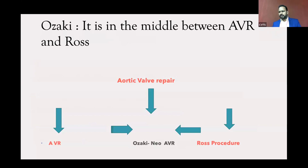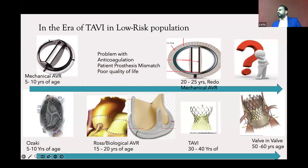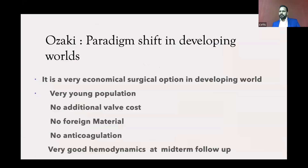In summary — when do I recommend Wasaki AVR? Definitely in children, young adolescents, and females in their reproductive age group. Certainly for early adults who would otherwise need a mechanical valve and lifelong anticoagulation, and for those with contraindications to anticoagulation. For surgeons working in low-resource settings without access to homograft, Wasaki AVR is a good tool to have. Personally, if you can repair the valve, that is best. But Wasaki Neo AVR falls in the middle between repair and AVR or Ross. In the era of TAVI, if you do a mechanical valve at age 5 to 10, you will re-operate around age 20–25, and then you are left with no option other than a third redo. With Wasaki, you can buy some time — maybe 5 to 10 years — and still have the option of AVR, biological, mechanical, Ross, or eventually valve-in-valve TAVI.